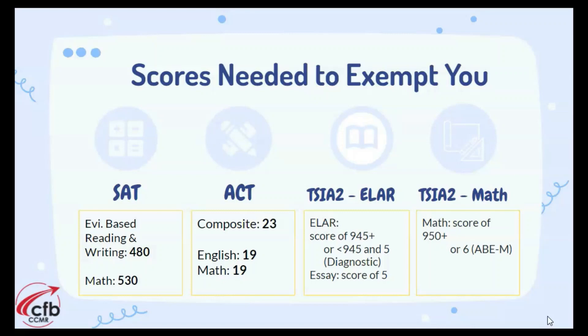Same thing when it comes to the ACT. You need an overall composite score of 23, but in English and in math, you need a score of 19 in each of them.